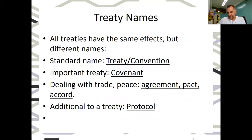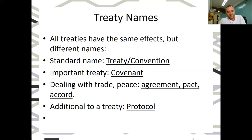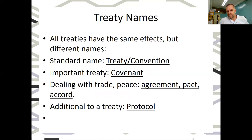In terms of human rights treaties, it's important to note that treaties may be called different names, but they're all basically the same legally binding documents. In human rights we have covenants and conventions. A covenant simply means a very important treaty, but it doesn't create different legal obligations. You also have names like agreements, pacts, and accords — used for trade agreements like NAFTA or peace agreements like the Israel-Palestine accord — but they all have the same legal obligations.